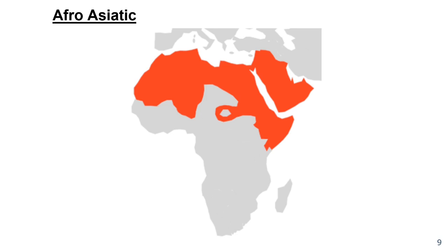The opposite of Niger-Congo is Afro-Asiatic. We have Africa and then we have Asia, both part of this one language family — that's why it's called Afro-Asiatic. Basically, this is Northern Africa and then a little bit of the Middle East: Saudi Arabia, Yemen, Morocco, Egypt, and Algeria. Arabic might be part of Afro-Asiatic. The hearth of Afro-Asiatic is in Saudi Arabia, and then it diffused through relocation diffusion to Africa.